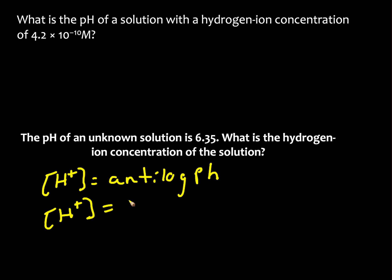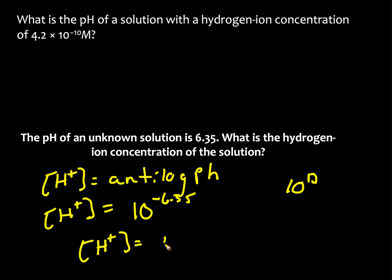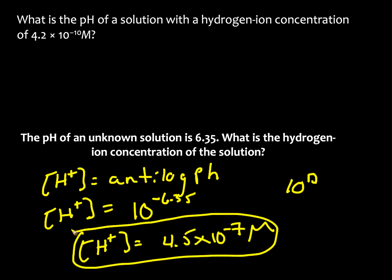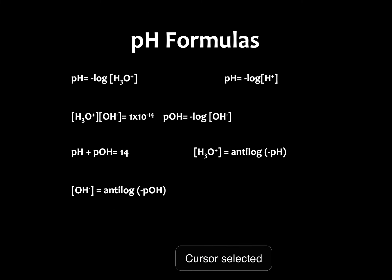When we plug this into our calculator using second log, the calculator should read 10^(−6.35), and our H⁺ should be 4.5×10⁻⁷ molar. So in the anti-log equation, the negative pH is raised to the power of 10 — press second log, then enter the negative pH to get the concentration.